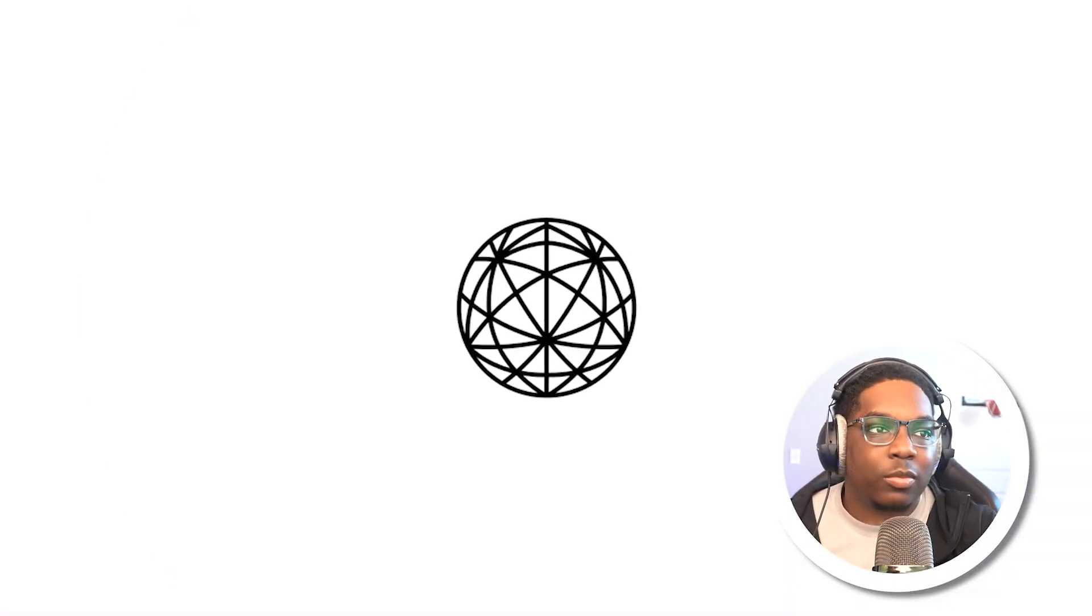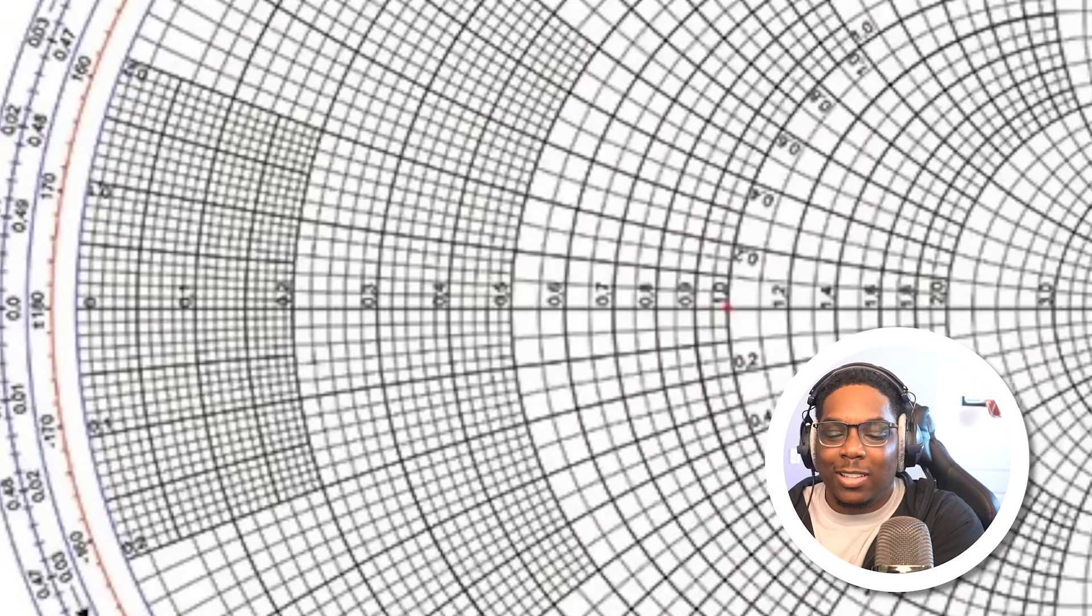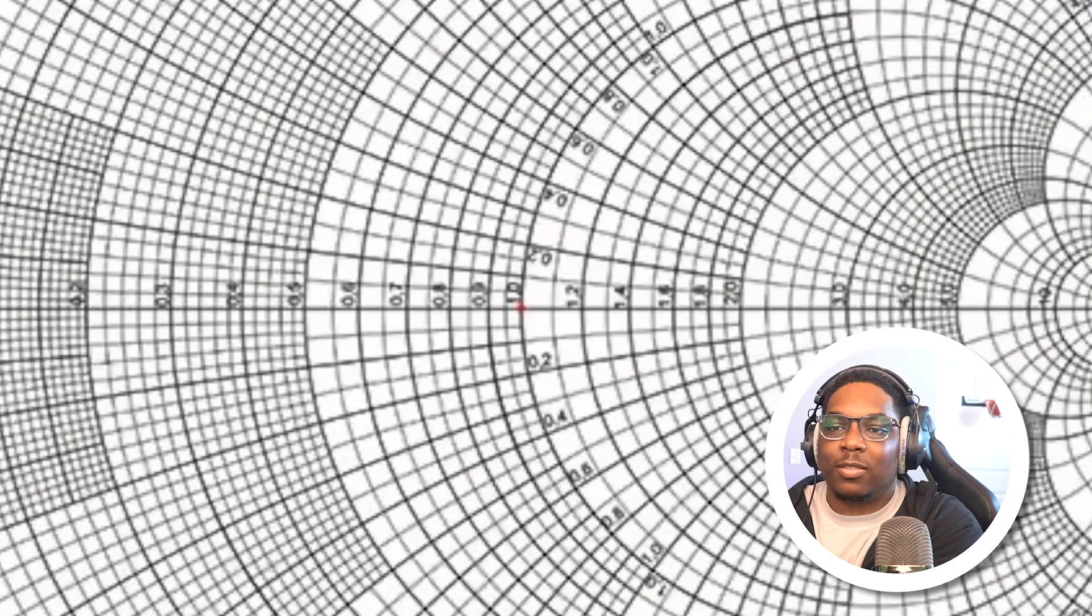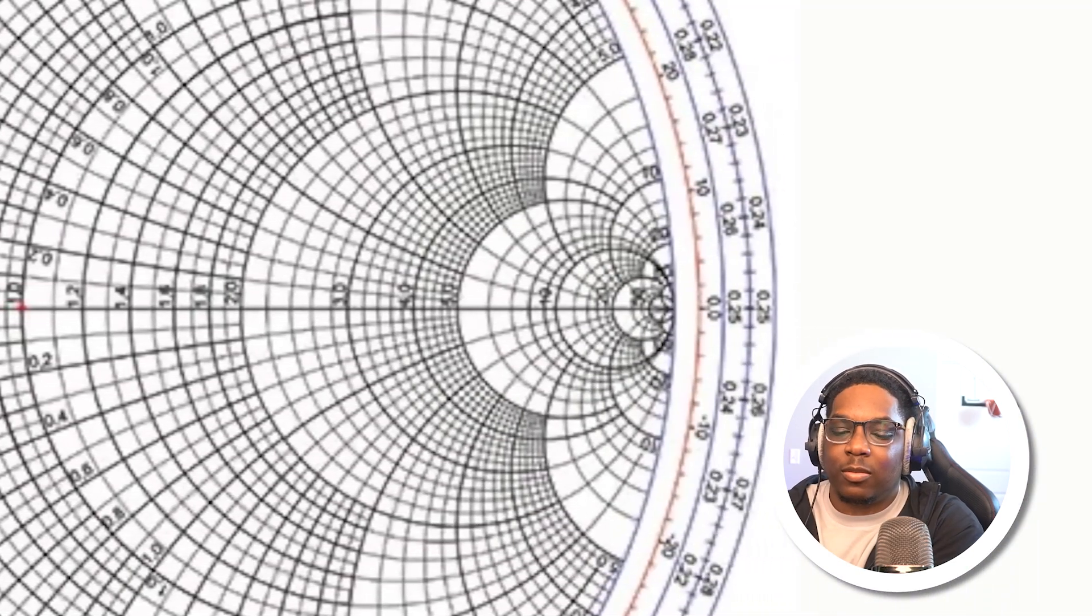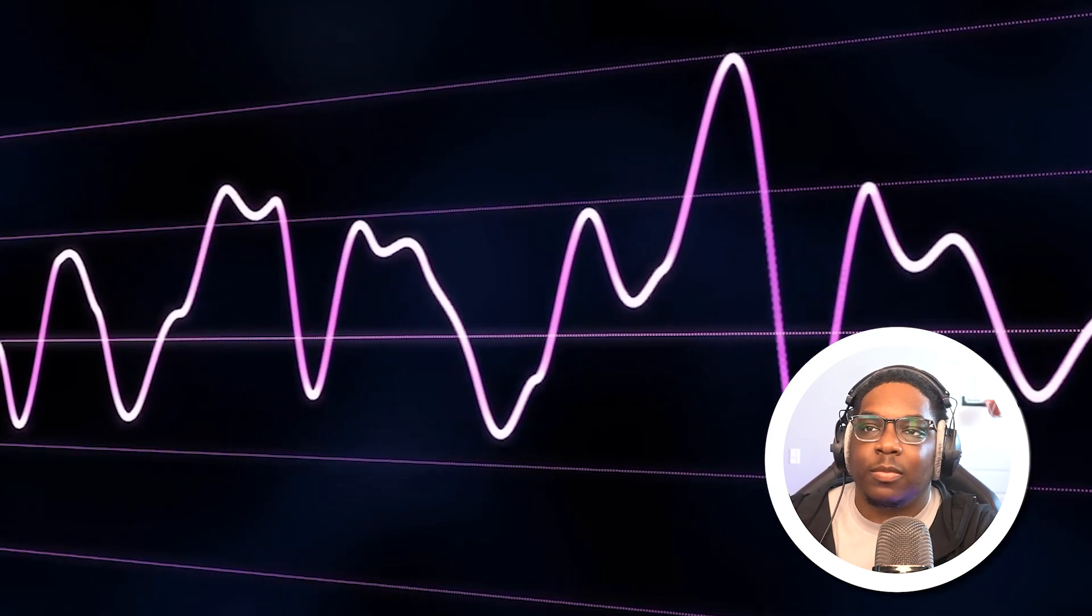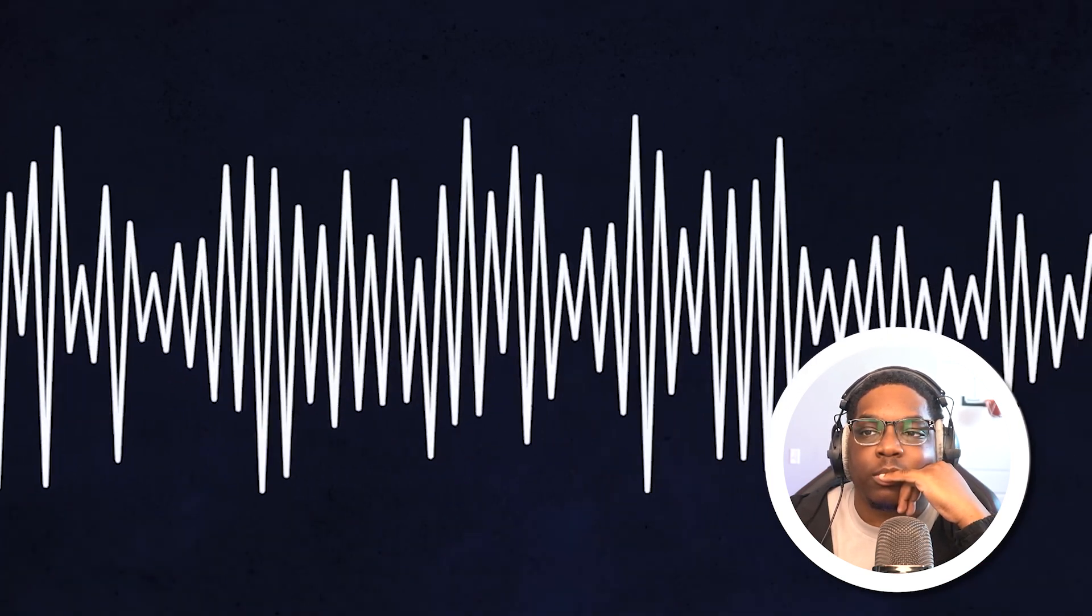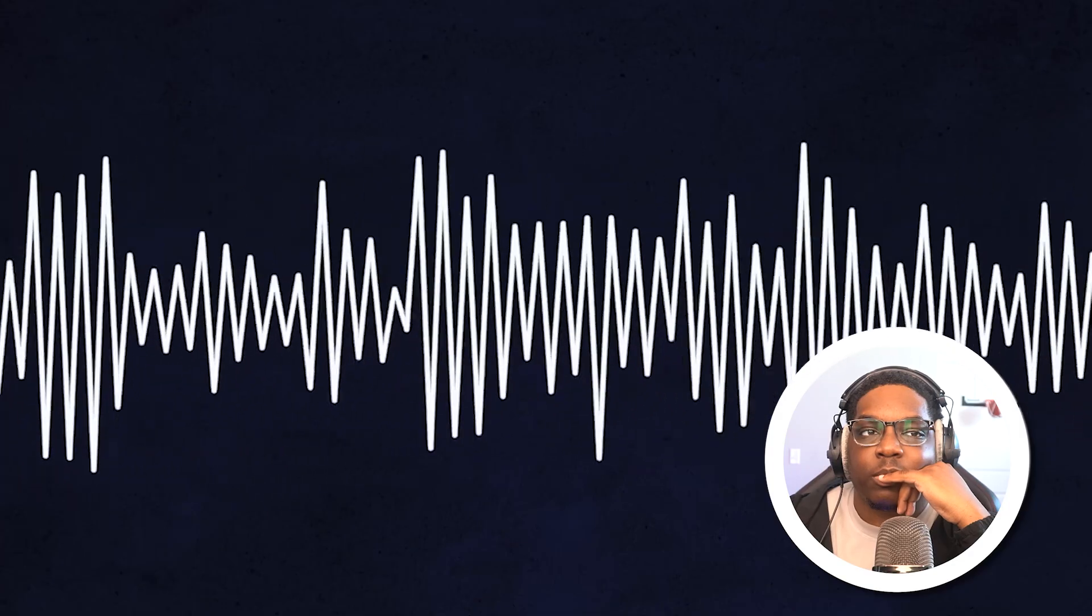I present to you the Smith chart. Ooh, scary. But it's actually not that bad. So what is this? Why do we use it? Here's the story. When dealing with low-frequency signals in a cable, like the 50 or 60 hertz signals that come from our wall outlets, or even audio signals that go up to 20 kilohertz, which is the maximum frequency humans can hear, the associated wavelengths are very long.